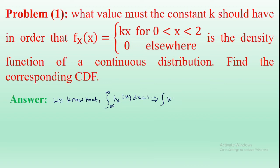The probability density function is f(x) = kx for x from 0 to 2. The given interval is 0 to 2; in this interval the density function value is kx. So the integral from 0 to 2 of kx dx equals 1. Since K is a constant it is written before the integration: k times the integral from 0 to 2 of x dx equals 1.